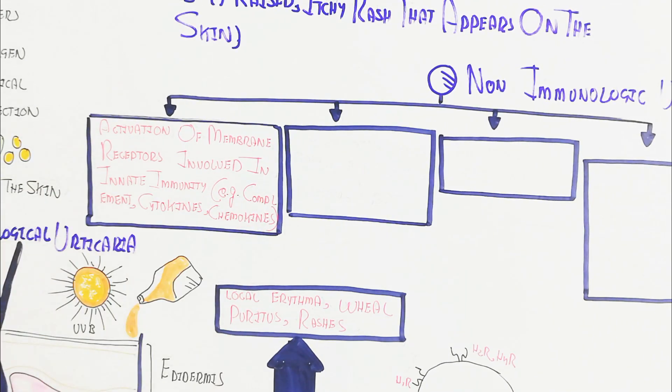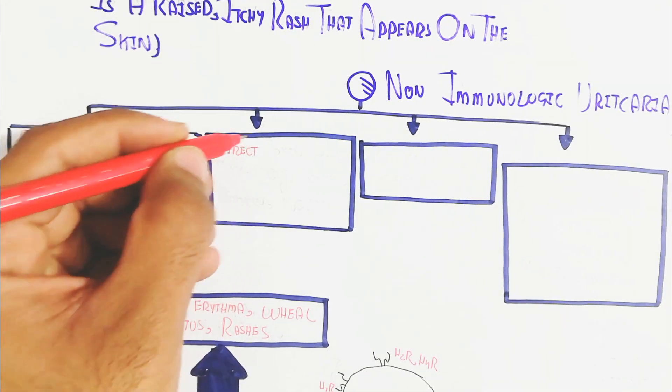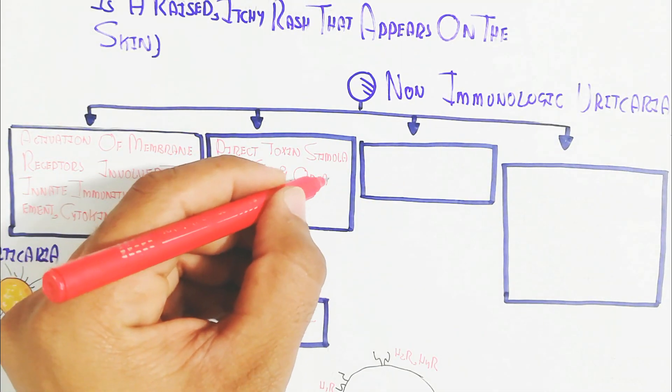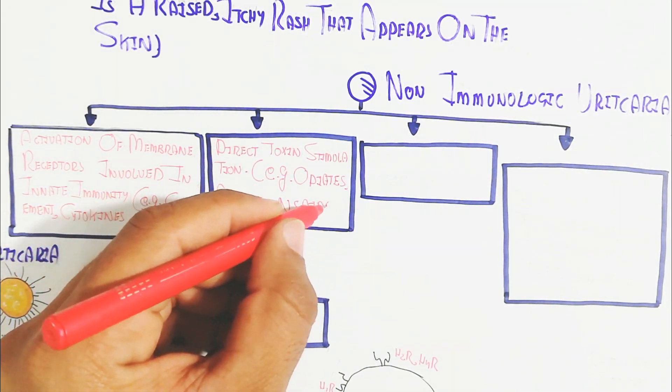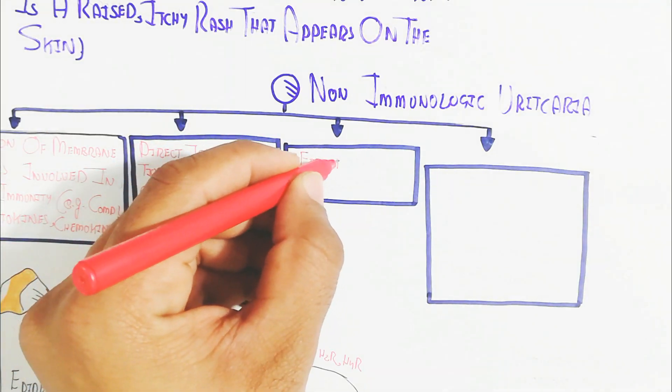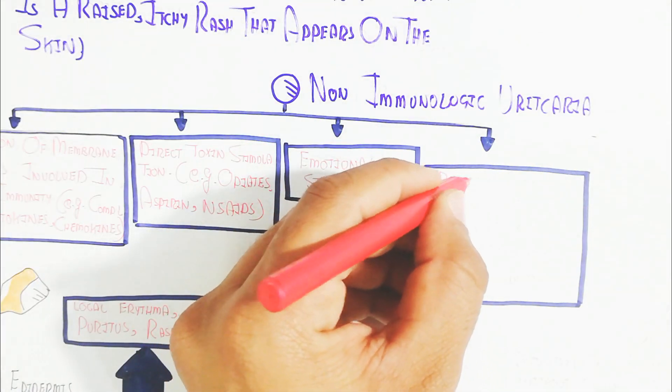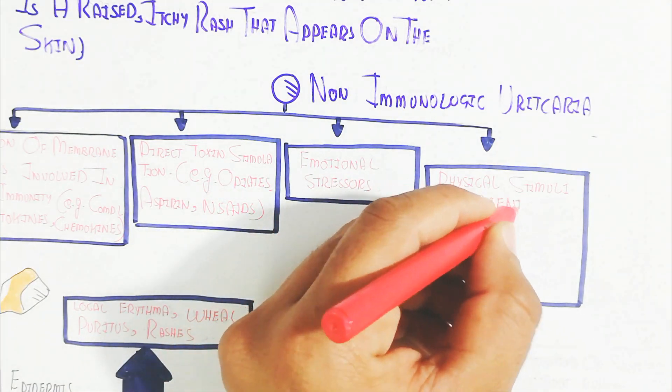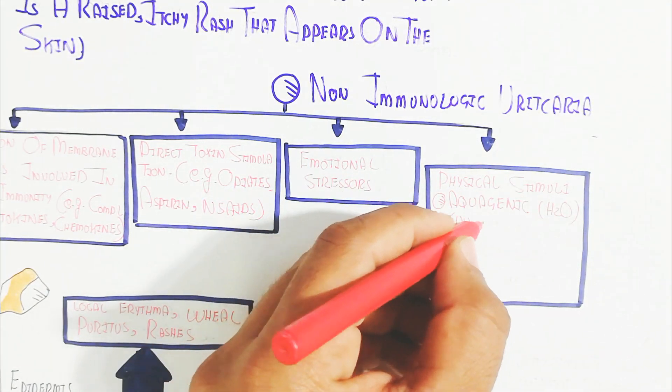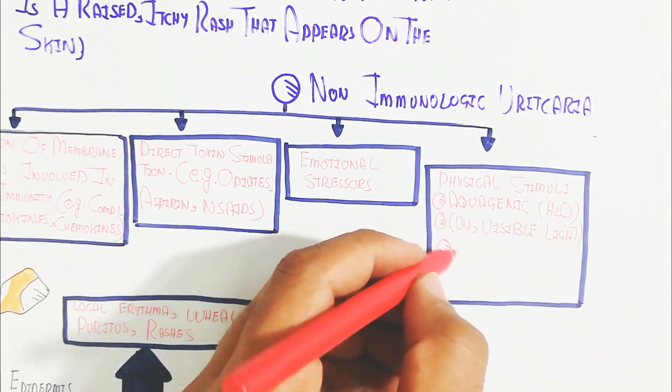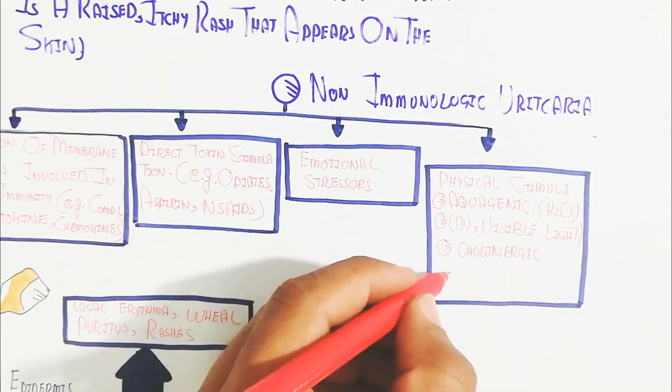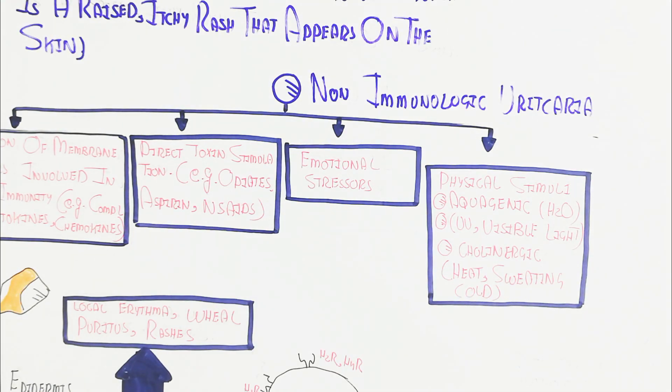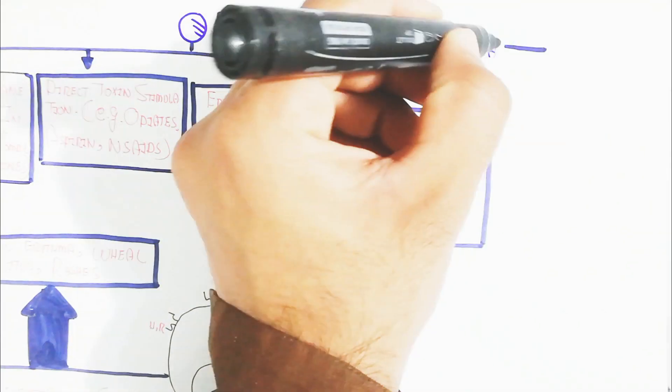Direct toxin stimulation - examples are opiates, aspirin, and NSAIDs. And emotional stressors are also involved. On the other hand, physical stimuli like aquagenic (H2O), UV radiation, visible light, cholinergic, heat, sweating, and cold.